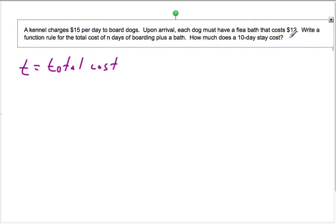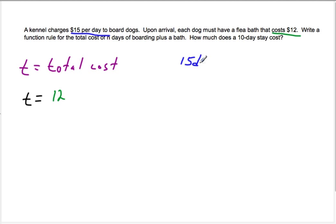So upon arrival, each dog must have a flea bath that costs 12 bucks. So we've got to start with that because the dog comes in. We've got to start with 12 bucks. So T is going to equal that 12 bucks. And then, a kennel charges $15 per day. So 15 per day, that means 15D, right? Because if it's one day, it's 15. If it's two days, it's 30 and so on. So we're multiplying 15 times days.